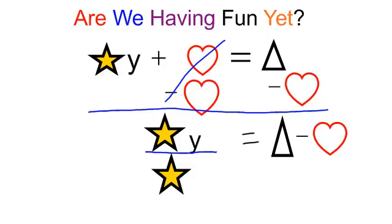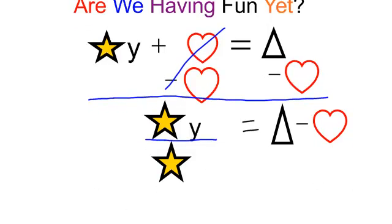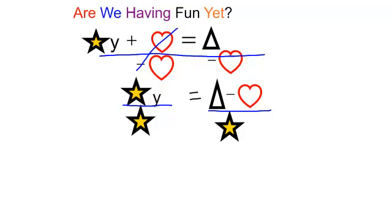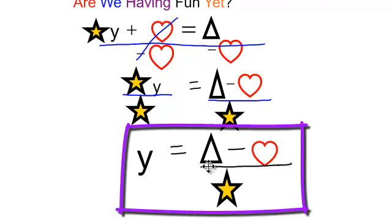But if you divide the left side by a star, you need to divide the right side by a star. So what do you think happens on the left? Sure enough, those stars cancel out just like I planned. So I will have y equals triangle minus heart divided by star.